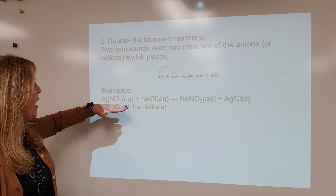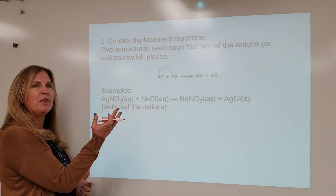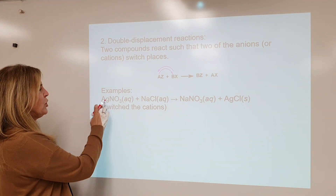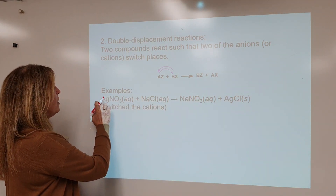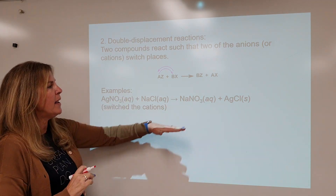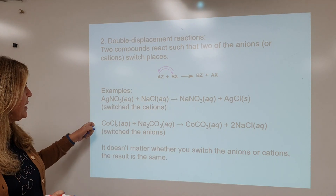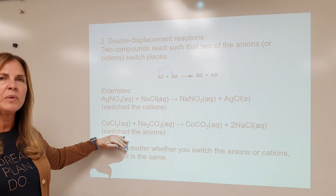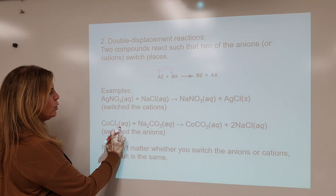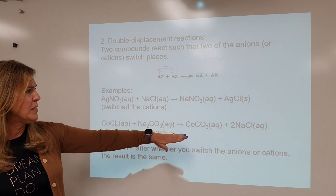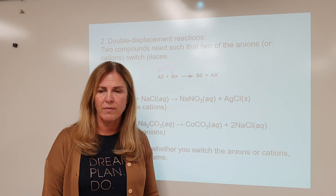Here we have compound plus compound — as soon as I see that, I know double displacement. I look at the cations switching places. Silver is going to go with chlorine, sodium is going to go with nitrate. So we have sodium nitrate and silver chloride. Alternatively, looking at the anions switching: chlorine and carbonate switch partners, so cobalt goes with carbonate and sodium goes with chloride. Then you balance the equation.